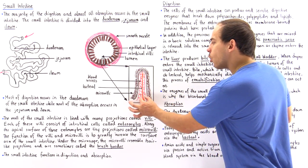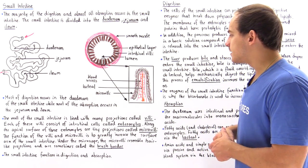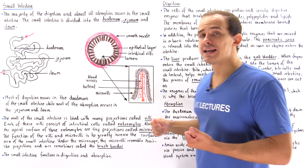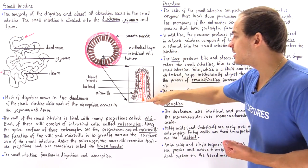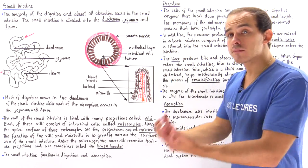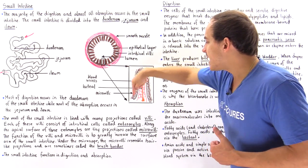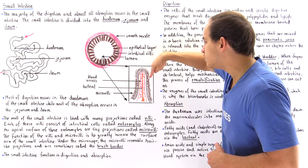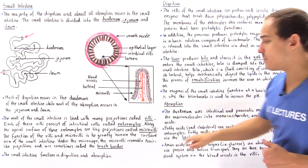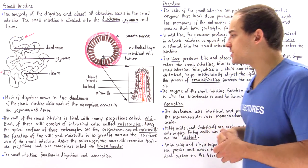The single orange vessel is known as the lacteal, which connects to the lymph system. Fatty acids are absorbed into the enterocytes and transported into the lacteal and lymph system, while amino acids and monosaccharides are absorbed and transported into the blood system. This entire hair-like projection border is known as the brush border, where both digestion and absorption take place.